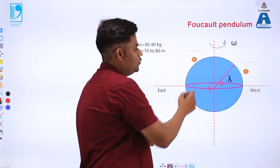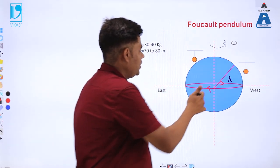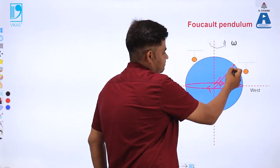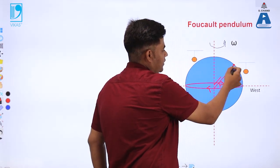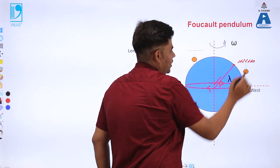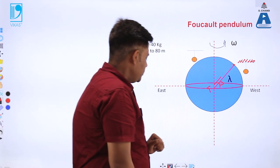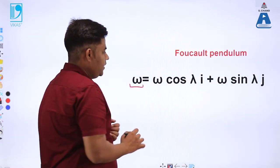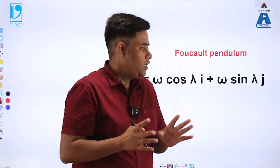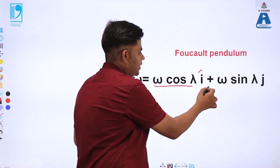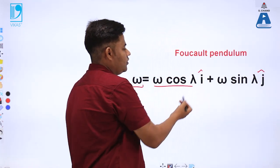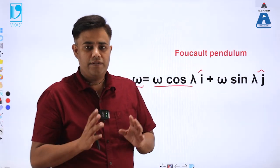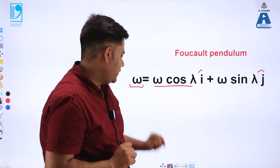What happens if we keep this pendulum at a particular angle? Let's say we have an angle lambda, and we place the pendulum at that angle. Here omega would be divided into two components: omega cos lambda in the i-vector direction, which is the horizontal component, and omega sin lambda in the j-vector direction, which is the vertical component due to the angular position on the surface.